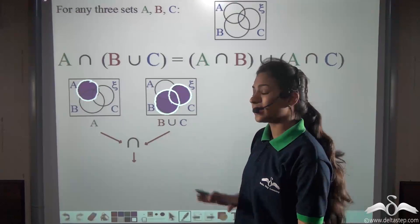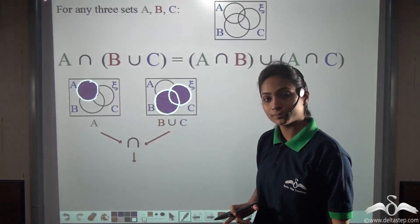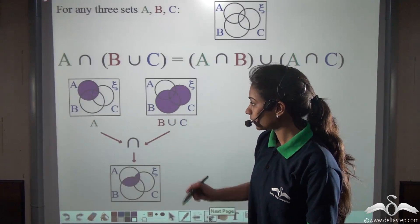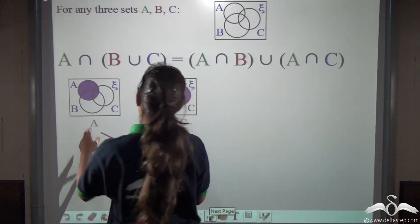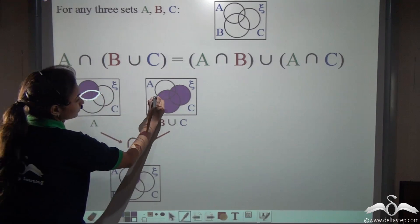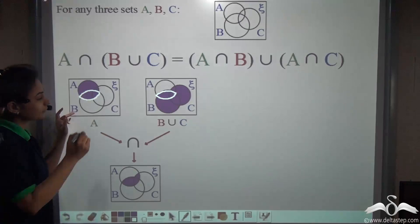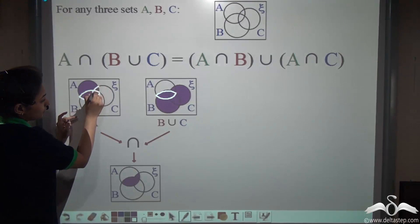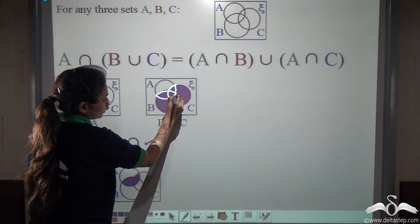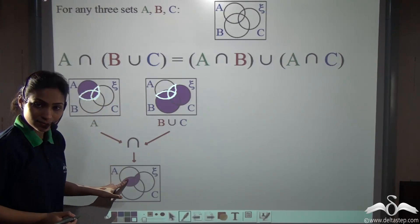What will be the intersection? Can you tell me which parts are common in both? We can see that in both these parts, this part is common and this part is also common. That means the intersection between these two Venn diagrams is this shaded region.